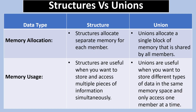Structures are used to group different data types under a single name, and each piece of data has its own memory location. For unions, all members share the same memory location, meaning a union variable will occupy only as much memory as its largest member. Let's take a simple example to understand this better.